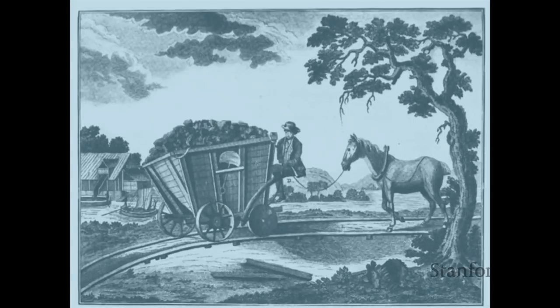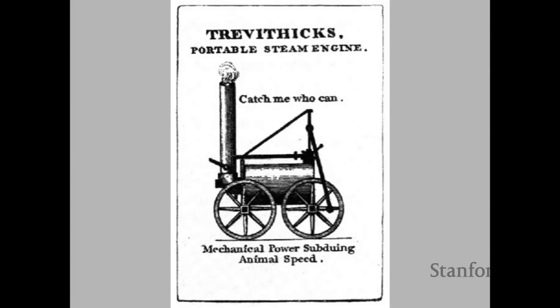These coal mines were typically up in the hills close to a source of water for barging the coal to London. A typical rig moved coal down to the river or shore — the horse is there to pull the empty cart back up the hill, and gravity controls the descent with a big brake on the cart.